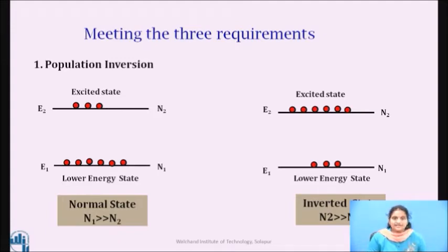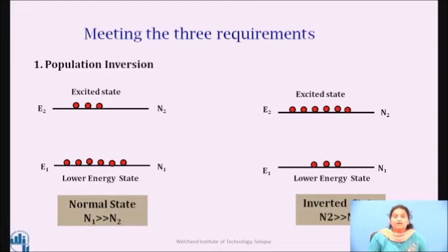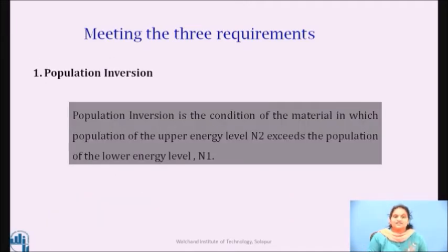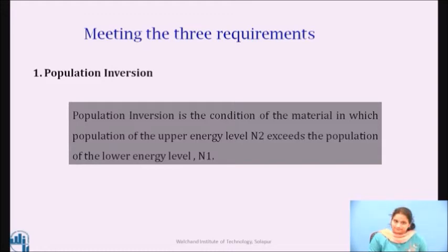Population inversion is obtained by employing pumping techniques, which transfer large numbers of atoms from the lower energy level to the higher energy level. Pumping is the process of supplying energy to continuously raise atoms from the lower energy state to the upper energy state. The definition of population inversion is: the condition of a material in which the population of the upper energy level N2 far exceeds the population of the lower energy level N1. The first requirement of more atoms in the excited state can thus be achieved by population inversion.